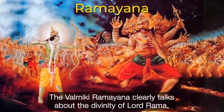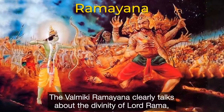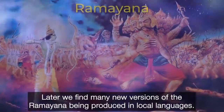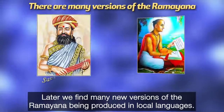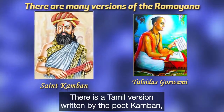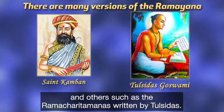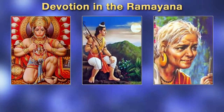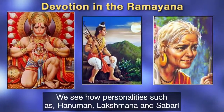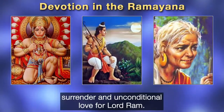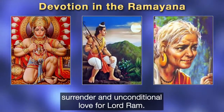The Valmiki Ramayana clearly talks about the divinity of Lord Rama, but is mainly focused on his virtue and his adherence to righteousness. Later we find many new versions of the Ramayana being produced in local languages — there is a Tamil version written by the poet Kamban, and others such as the Ramacharitamanas written by Tulsidas. In these versions of the Ramayana, bhakti or devotion becomes far more prominent, and we see how personalities such as Hanuman, Lakshmana and Shabari all wonderfully display perfect service, surrender and unconditional love for Lord Rama.